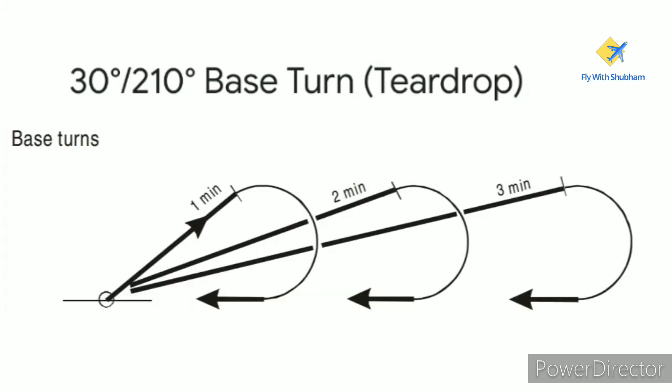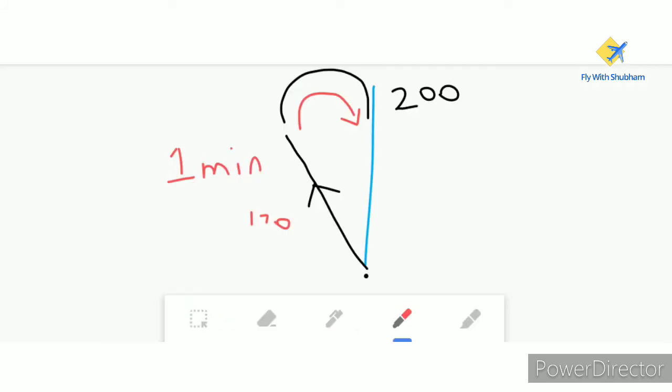The duration of these teardrop turns is on the outbound leg. So let's say you are going outbound on a radial of 2-0-0 from a station and making a 30-210 teardrop turn towards the left. You will decrease your heading by 30 degrees to 170 and fly for one minute on the outbound leg before turning inbound.